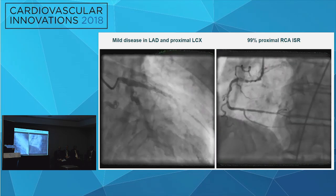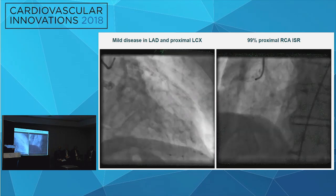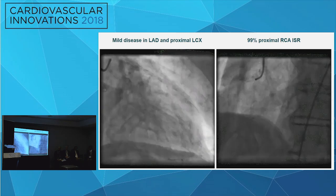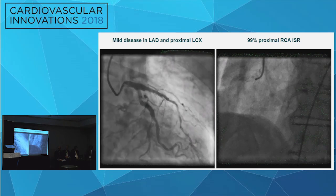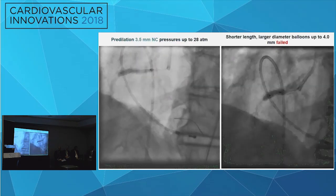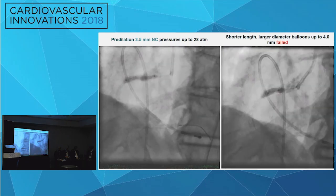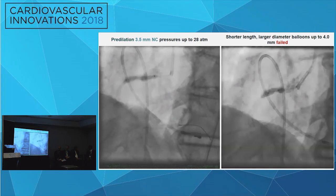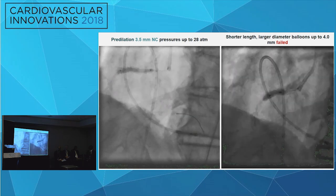We found mild disease in the LAD and proximal circ; however, the most severe lesion was the proximal RCA — an in-stent stenotic lesion. We delivered an all-star guide wire to the distal lumen and performed pre-dilation with 3.5-millimeter non-compliant balloons with pressures up to 28 atmospheres. However, we failed to fully dilate the lesion. We tried shorter balloon lengths with larger diameters and increasing pressures, but kept having the same results.